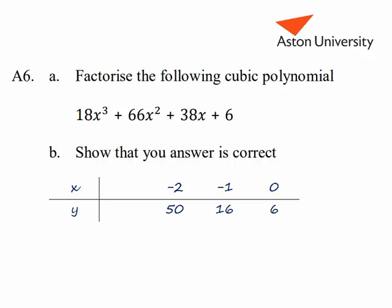We'll try one more, which is x is equal to minus 3. Minus 3 cubed is minus 27, times 18 is minus 486. Minus 3 squared is 9 times 66 is 594. And minus 3 times 38 is minus 114, which plus 6 gives us 0.